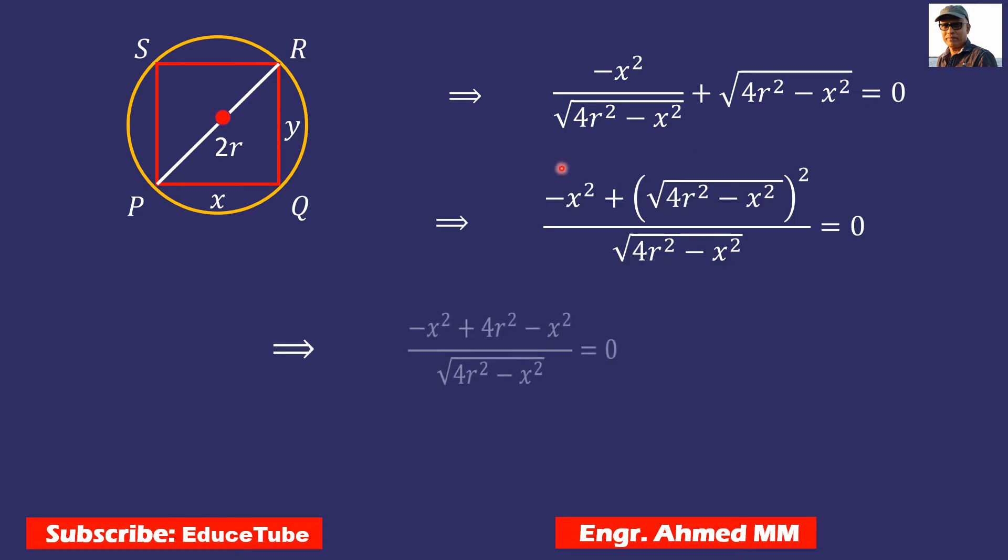Now we get this, step by step we proceed. At the end we are here in the simplest way. We got 4r² - 2x² = 0, so surely we can make a relation between r and x. That was our target. So x = √2r, we got this length x using first derivatives.